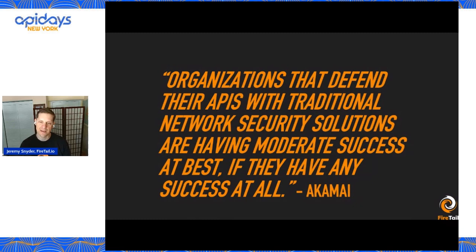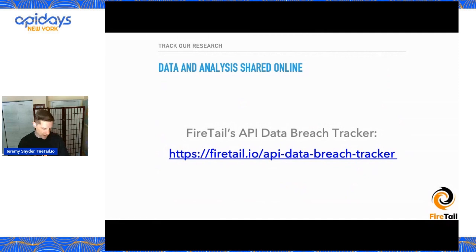One interesting point from that Akamai State of the Internet report: a common misconception is that you can solve API security through network controls. I think that quote and our research both help illustrate why you can't think about it that way. Here's the link to the breach tracker — you'll find the report on our website.